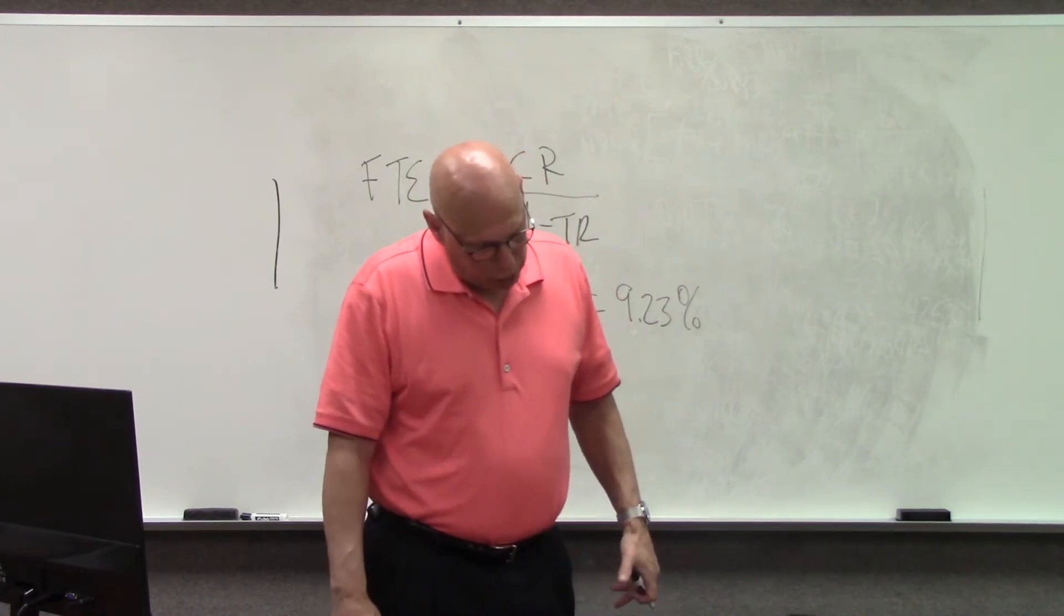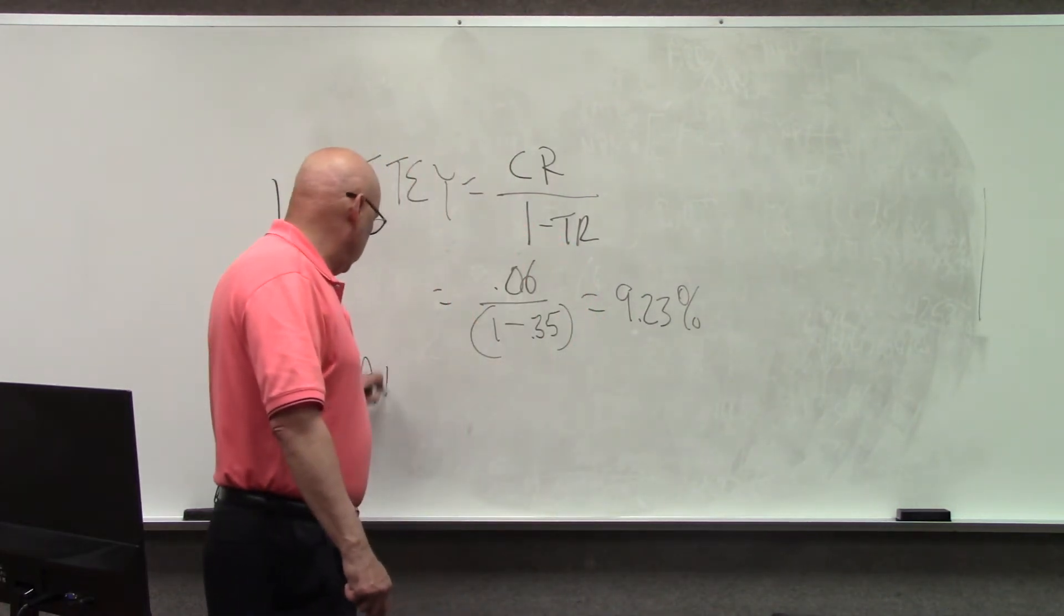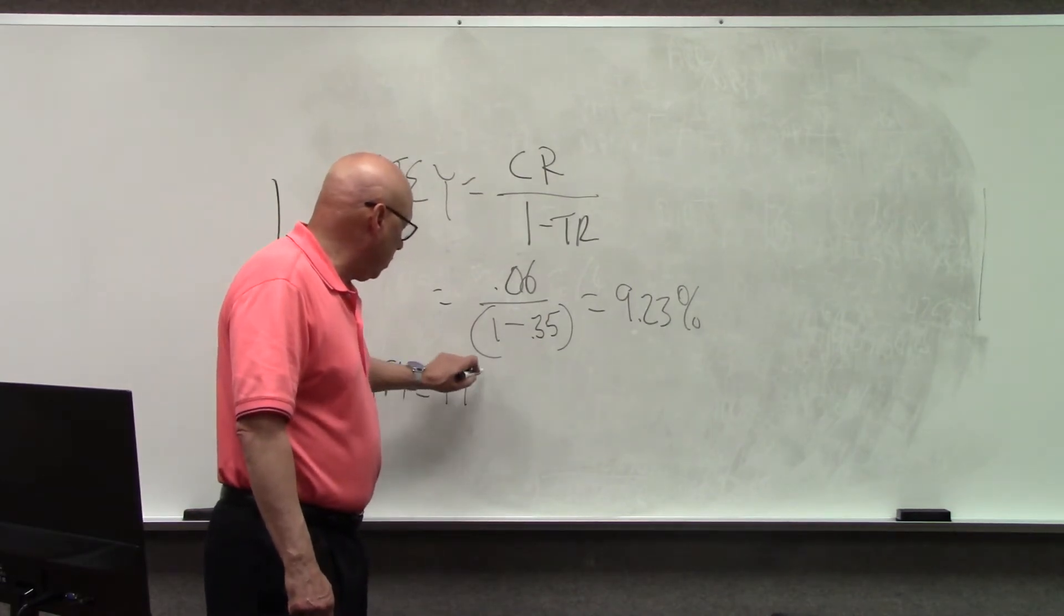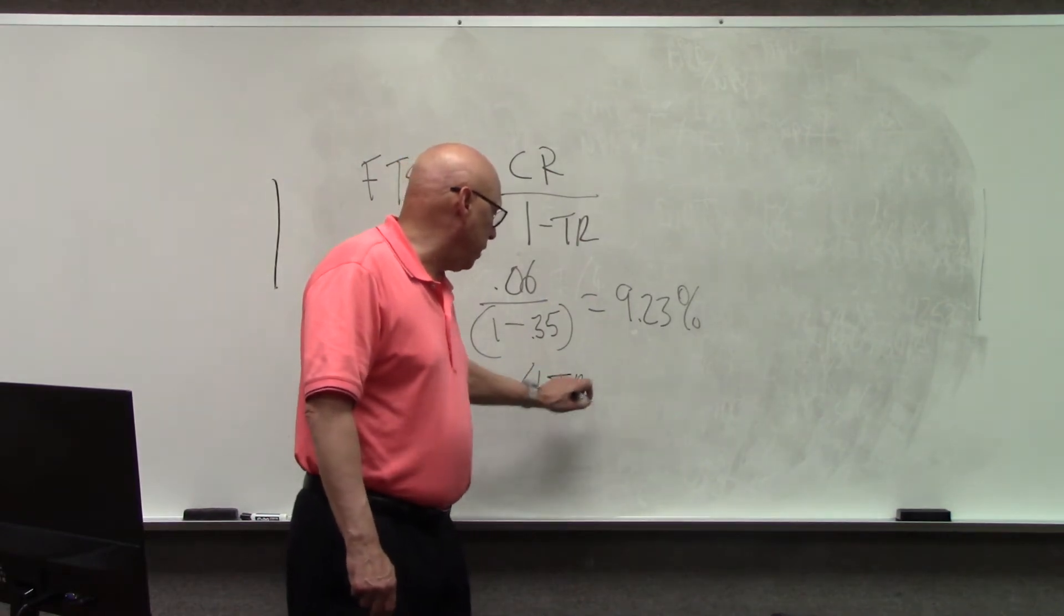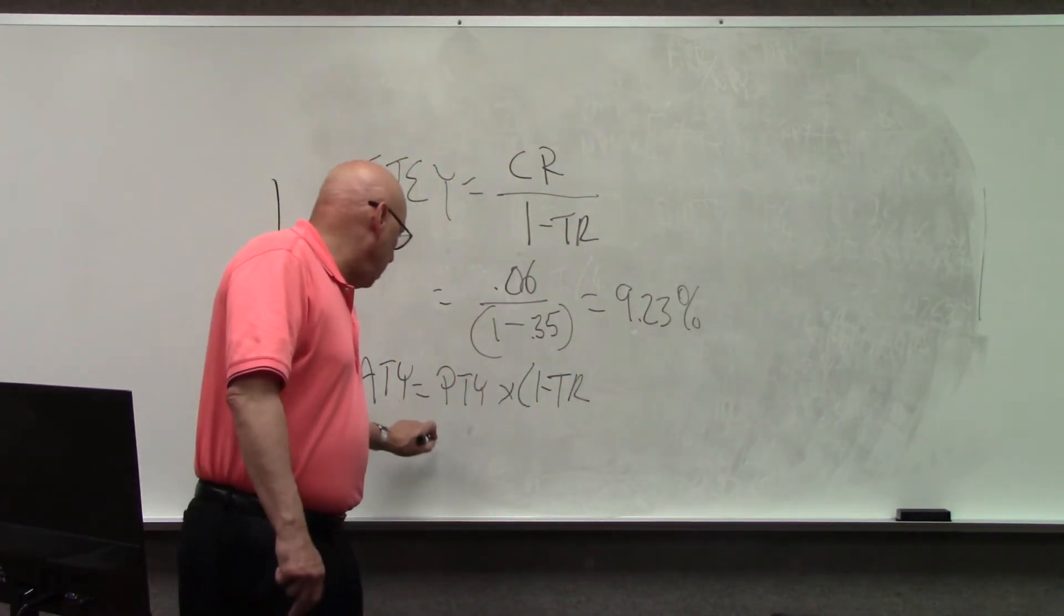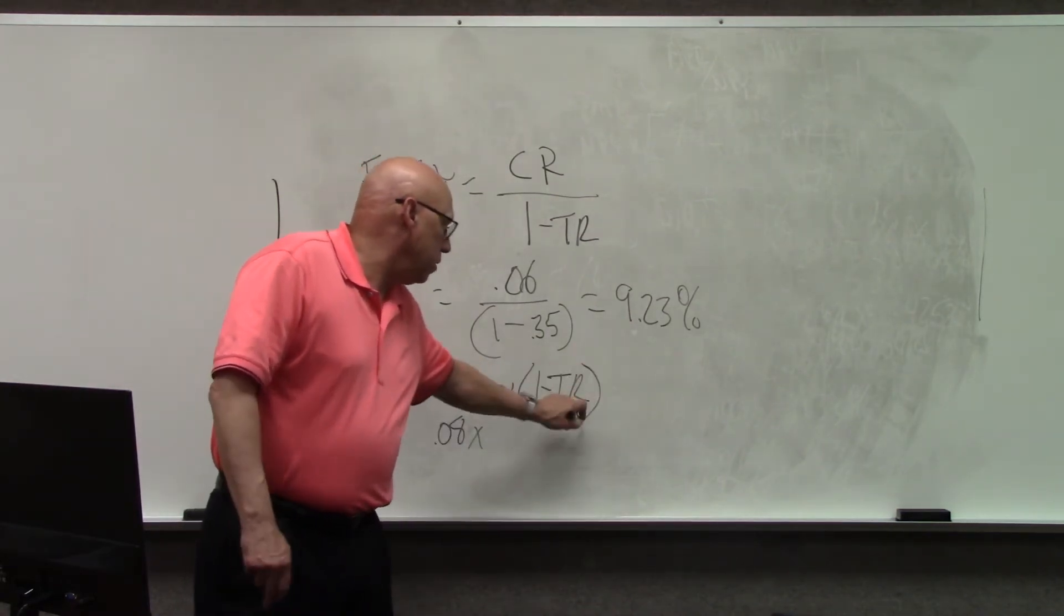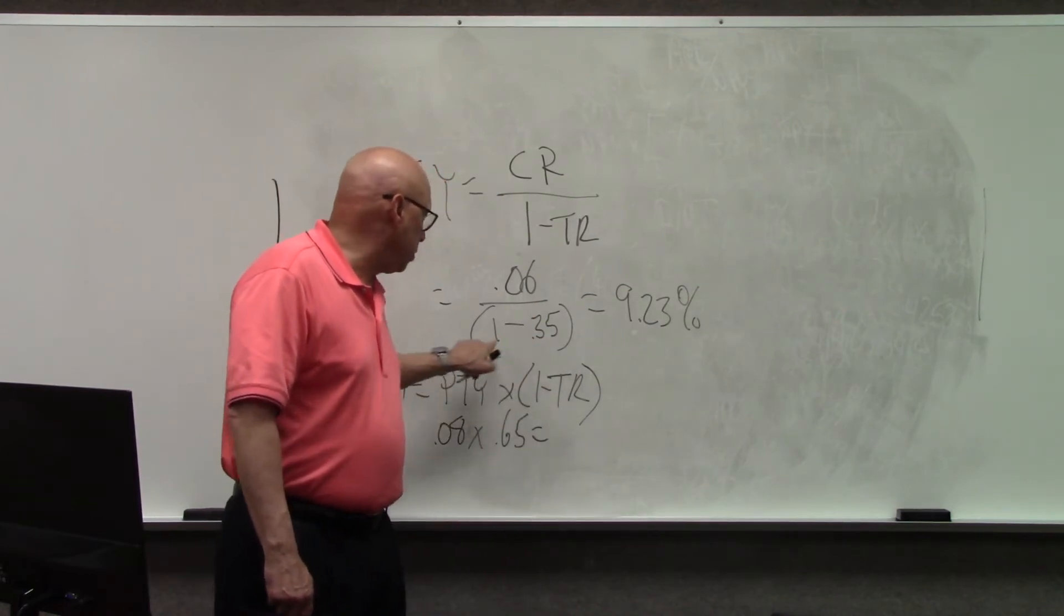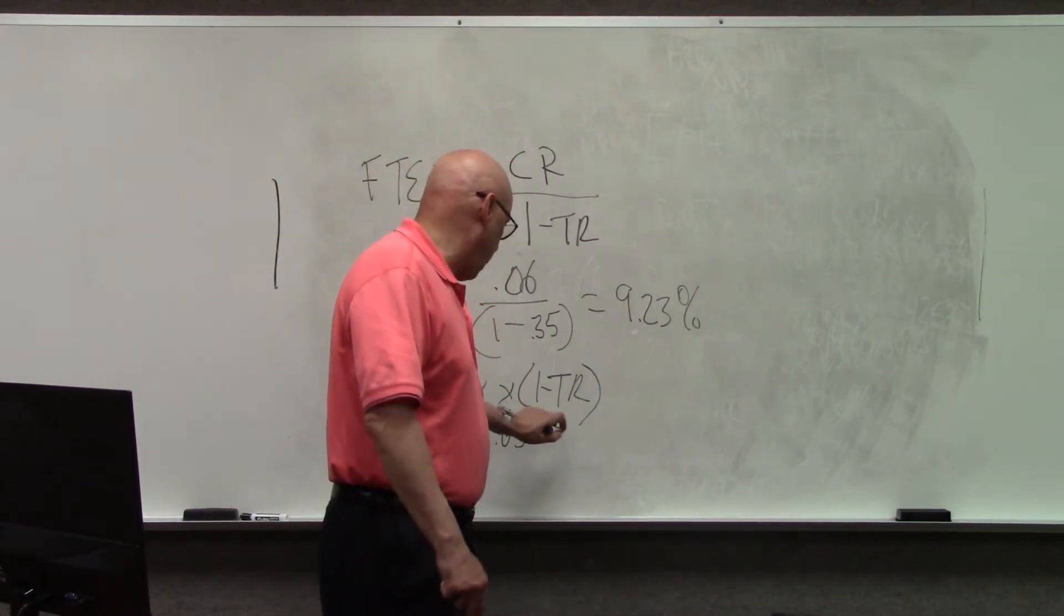A corporate bond has an 8% coupon rate. For the investor above, what is the after-tax yield of this bond? The after-tax yield equals the pre-tax yield times 1 minus the tax rate. So, this would be 0.08 times 1 minus 0.35, which is 0.65. Pay 35% in taxes, keep 65% for yourself, and you get 5.2%.